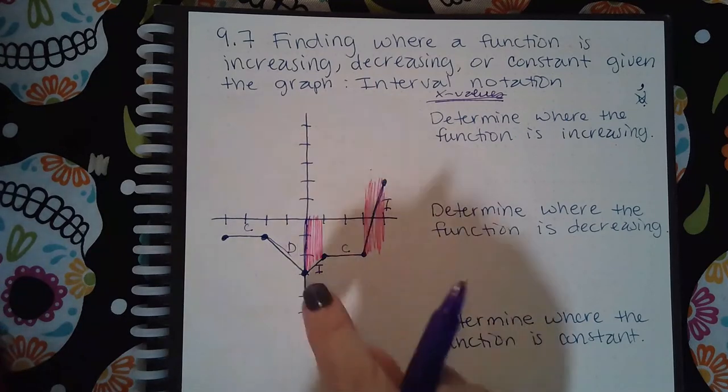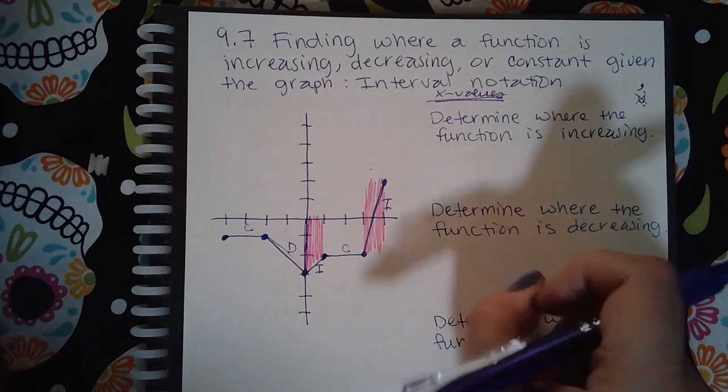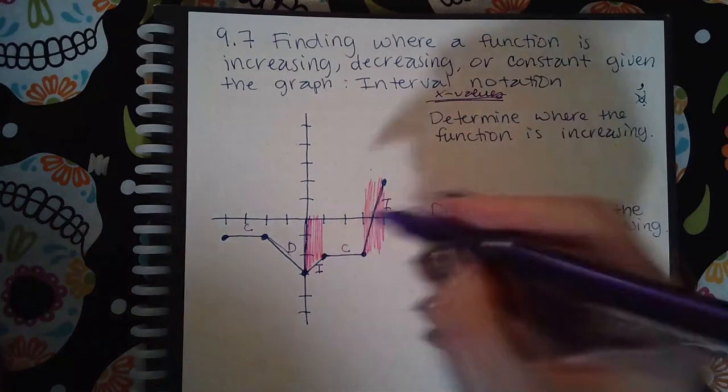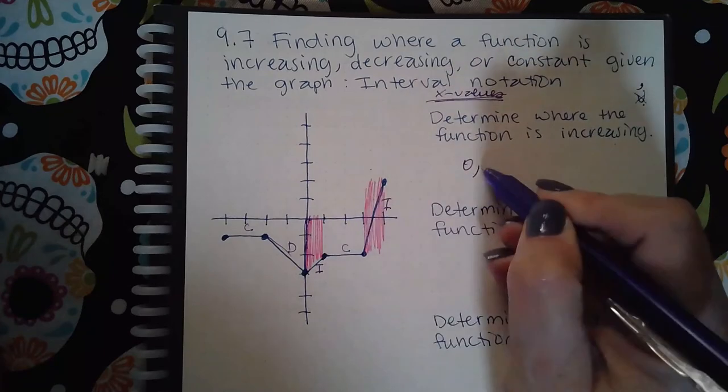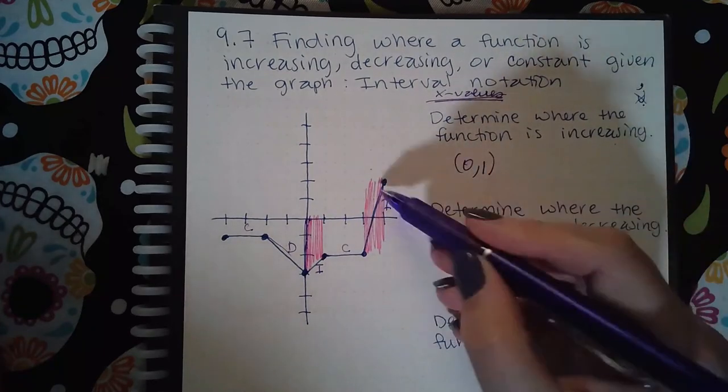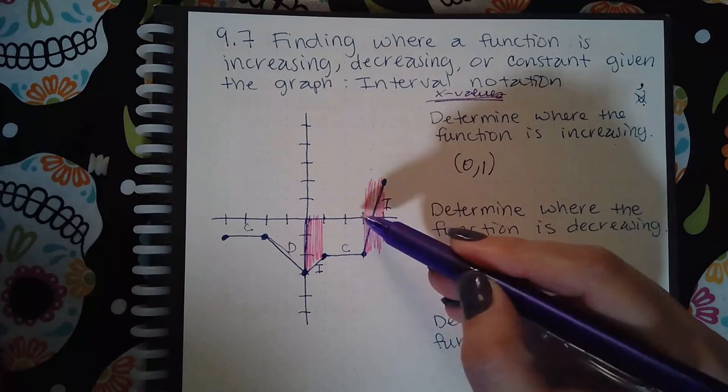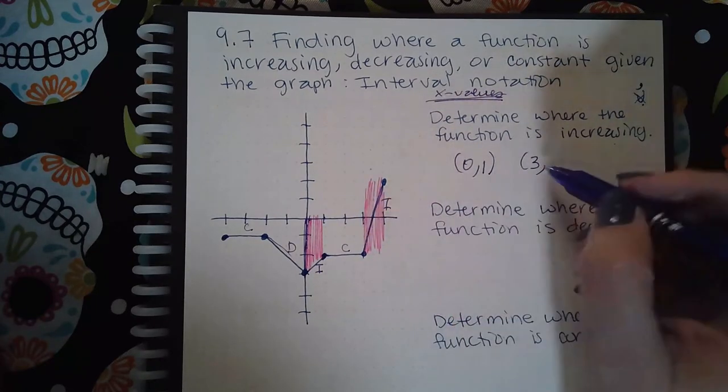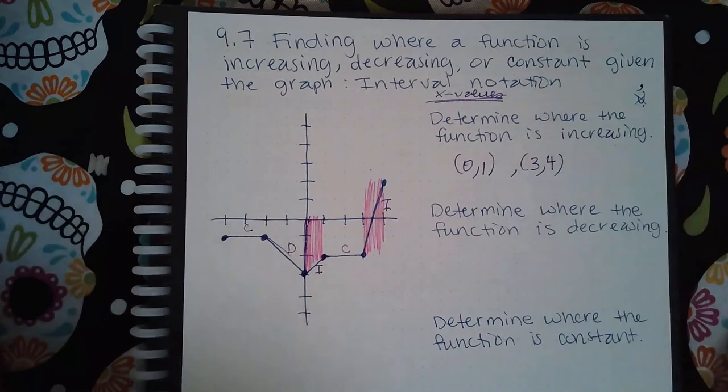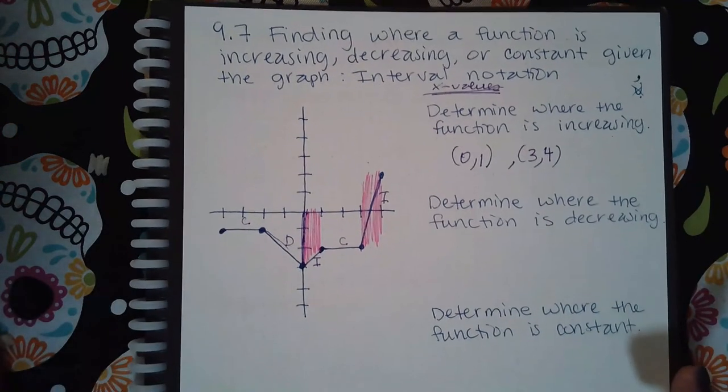The idea here is that you can never increase or decrease at a single point, so this will not be included in the intervals. For here and here, it's going to be this x value which is zero to this x value which is one. But then I have another section where the x value is one, two, three, and then four. Those are the two intervals for increasing.